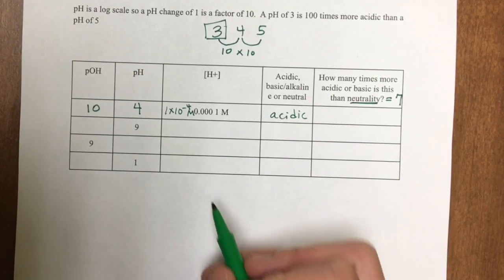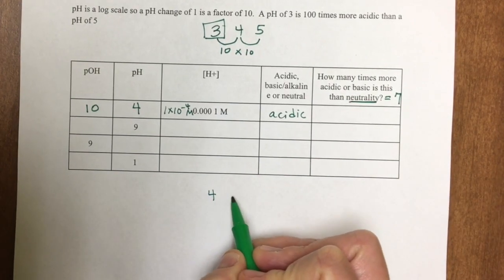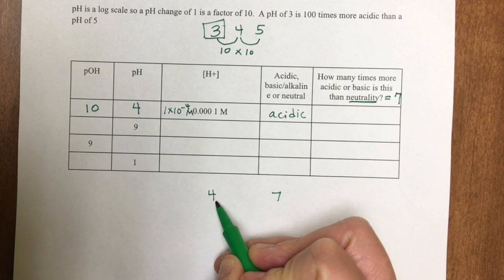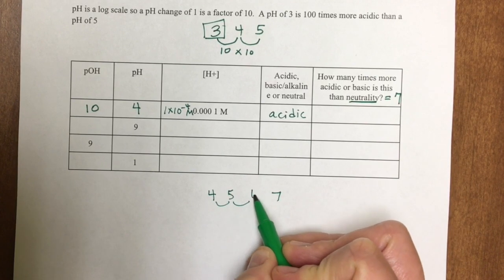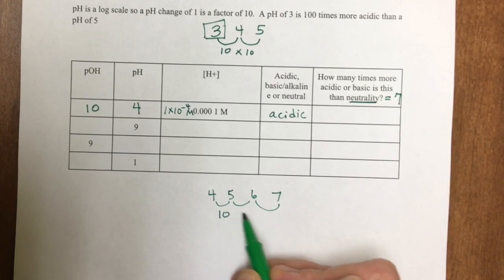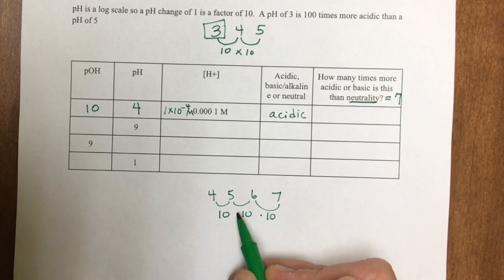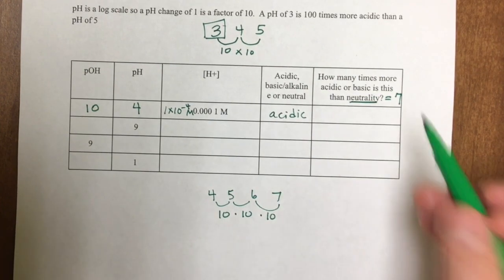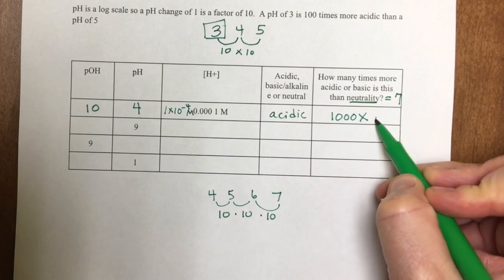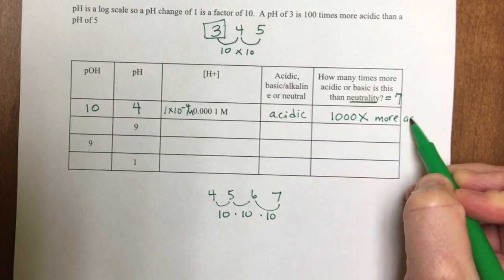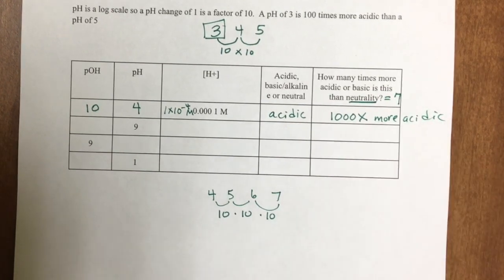The difference between 4 and 7: I go 4 to 5, 5 to 6, 6 to 7. So 10, 10, 10. 10 times 10 times 10 is 1000 times more acidic than neutrality.